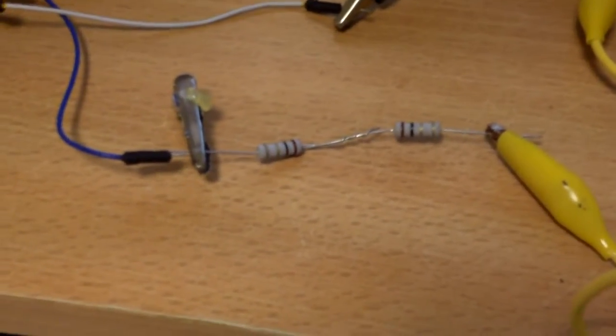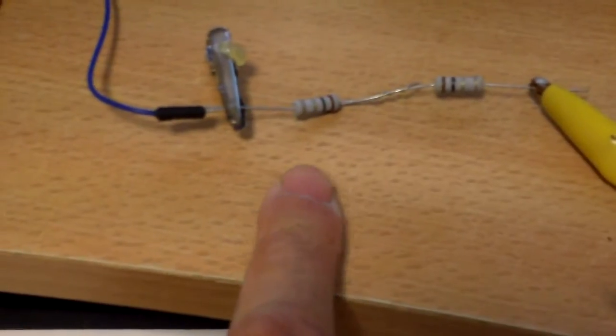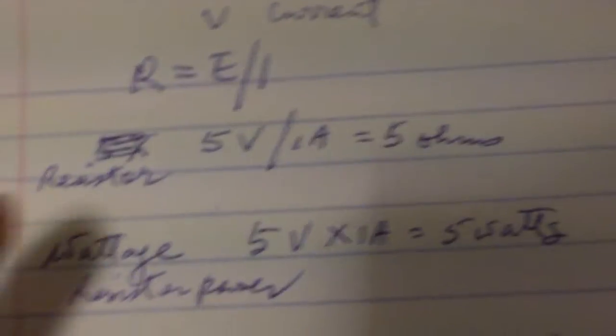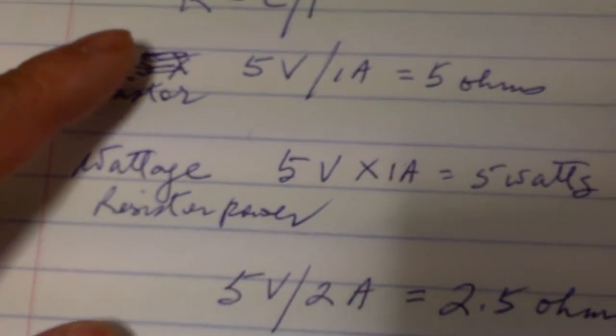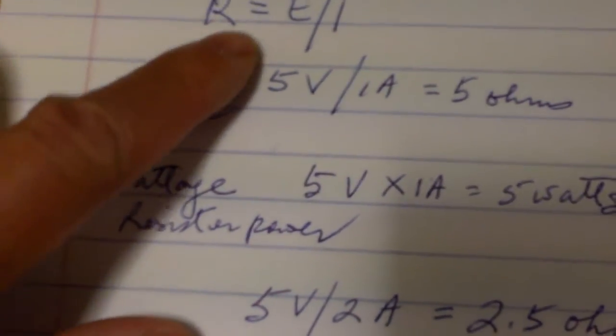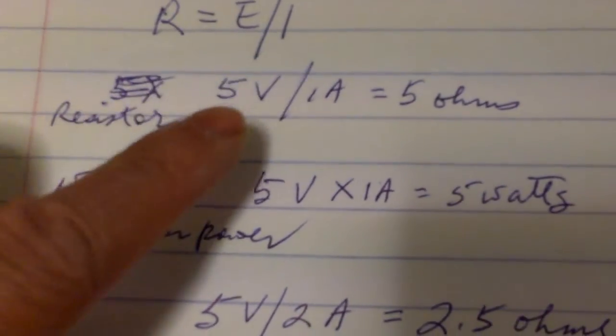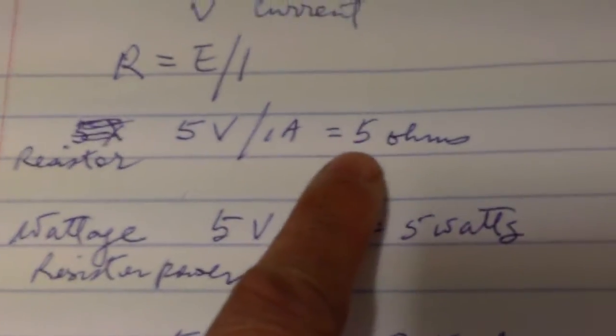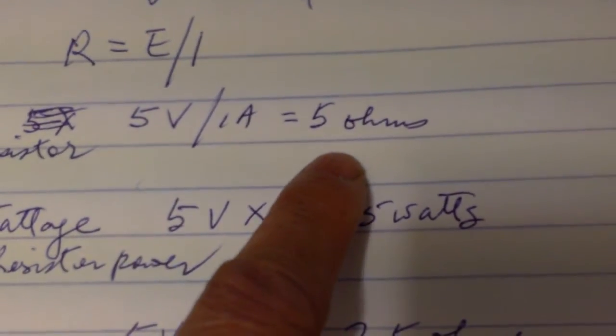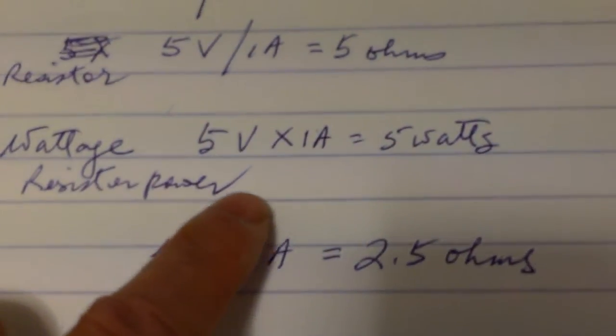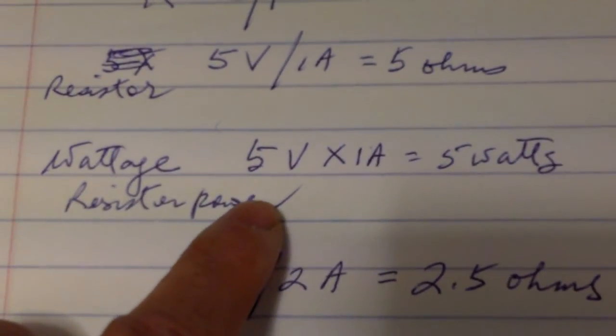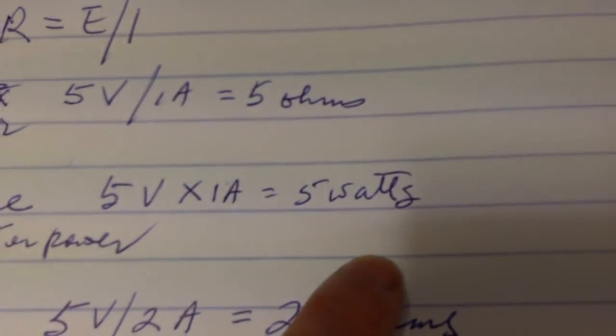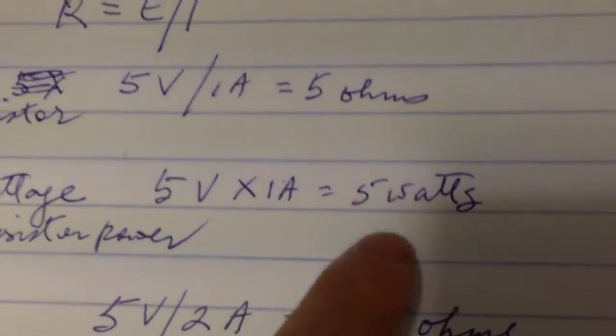And to determine the type of resistor used, I go by this formula: resistor equals voltage divided by current. So 5 volts, if it draws 1 amp, your resistor should be 5 ohms. And the power of the resistor or the wattage is 5 volts times 1 amp, so you should be using a 5 watt resistor.